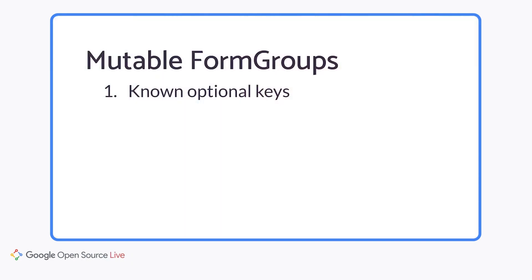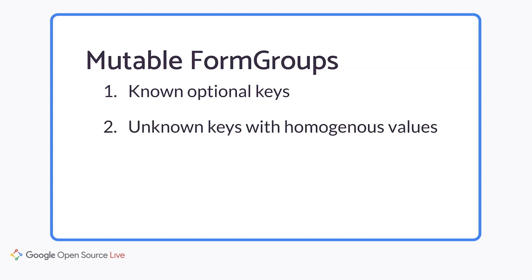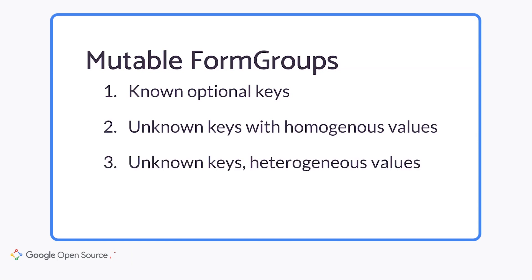That's not the only case in which you might have optional keys in your form. Much of the time you don't fully know the structure of your form group in advance, but there are still certain properties we can exploit to provide at least some type safety. If you know all the keys that might be present, we can treat them as optional at the type level. You might not know which keys will be inserted, but as long as all the values are the same type, we can still provide some type safety. The final case is when you truly know nothing about the shape of your group.